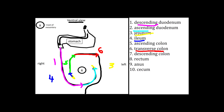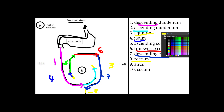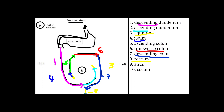The descending colon continues from the transverse colon and heads caudally to the left of the root of the mesentery, all the way down until it reaches the pelvic inlet. Once the descending colon enters the pelvic inlet it becomes the rectum, and then the external opening of this digestive large intestine would be the anus.